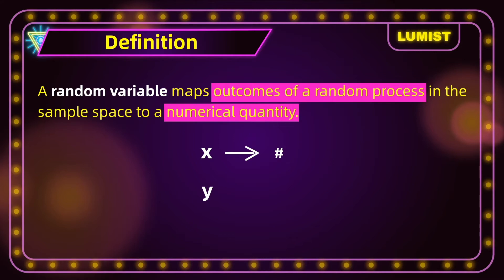Say you have a random variable y representing the random process of tossing a coin. Then what this definition says is this random variable y representing tossing a coin maps the random process of tossing a coin to a numerical quantity. So let's say in this case the numerical quantity is one half.